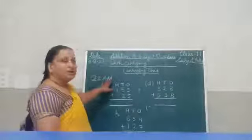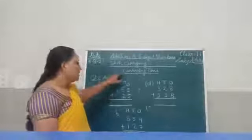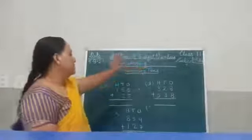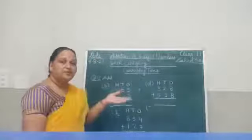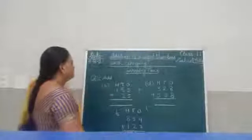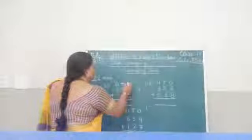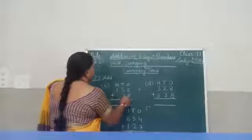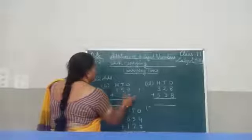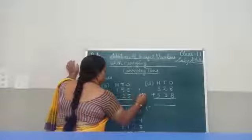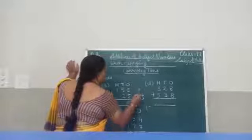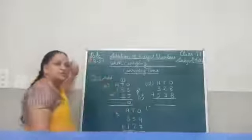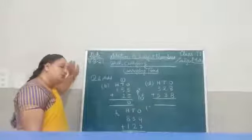Now question number 2. Again, the question is to add. We are learning carrying tens — adding numbers with carrying tens. We will start from ones place. The numbers are 155 plus 25. 5 plus 5 equals 10, so we will put 0 here and carry forward the 1 to the tens place. Yes, it is carrying tens.